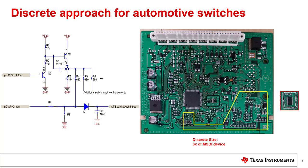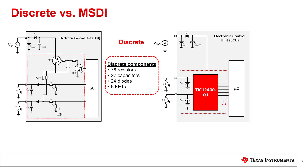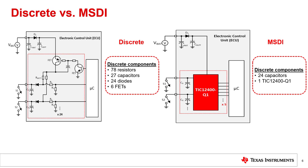MSDI, however, is a solution to all these problems, by integrating the discrete components for multiple channels into a single device, as seen in this figure. For example, a discrete 24-channel solution requires at least 78 resistors, 27 capacitors, 24 diodes, and 6 FETs, as well as 28 GPIOs on the MCU. With MSDI, the only components needed are the MSDI device, 24 capacitors for the IO pins, 5 capacitors for decoupling, 5 GPIOs on the MCU for the SPI bus, and hardware interrupt pins that need a single pull-up resistor.